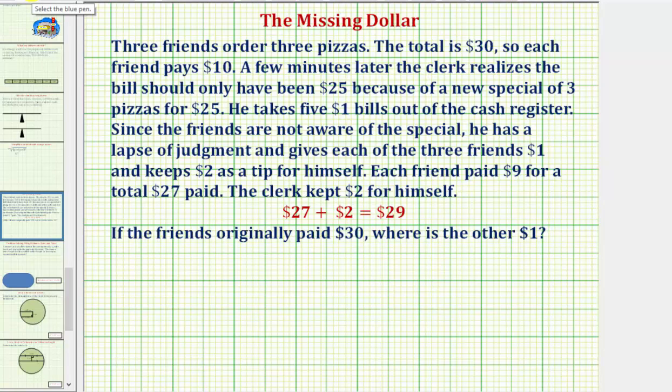To explain what's happening here, let's track where the $30 goes. We know the three friends paid $30, where $25 was for the pizza and they paid $5 extra. So let's start by saying that $25 plus $5 equals $30.